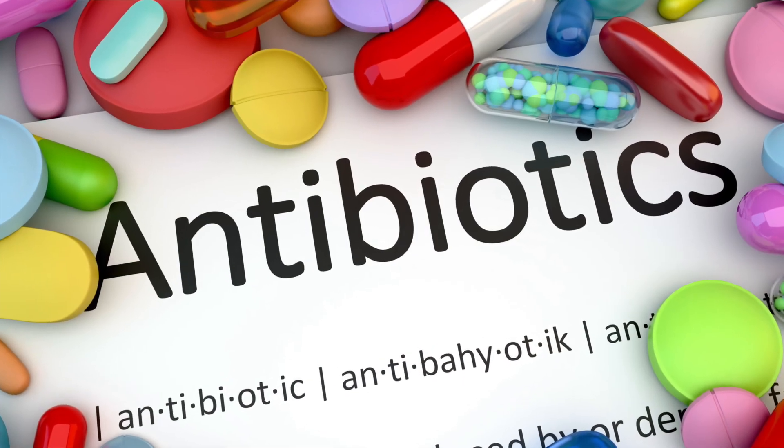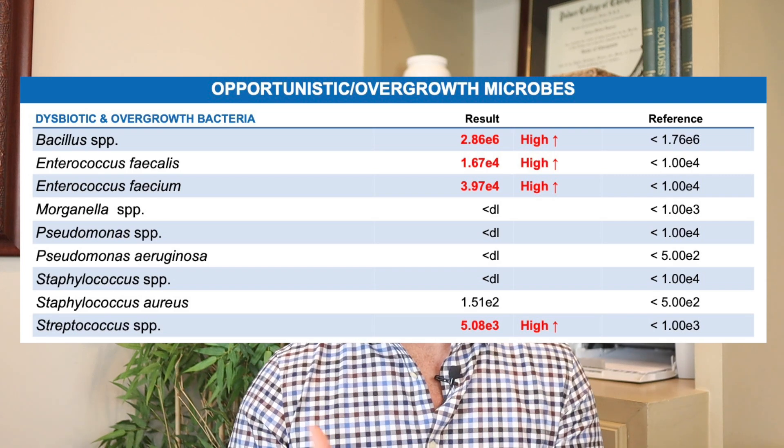Usually these bacteria don't get out of control, but there are a few scenarios that cause major shifts in our microbiome and set us up for histamine intolerance, bloating, and abdominal pain. Maybe you took antibiotics, went on a sugar binge, started taking birth control pills, consumed alcohol regularly, had food poisoning, or ate gluten and dairy. Whatever the reason, the end result was a drastic shift in your microbiome for the worse.